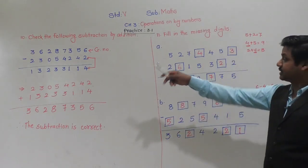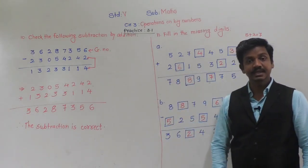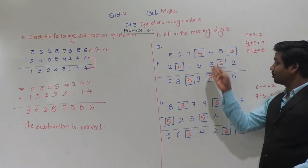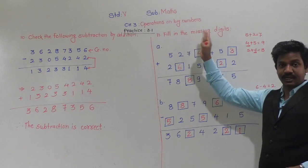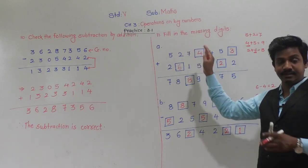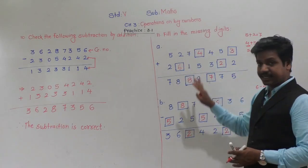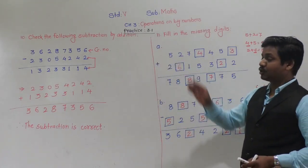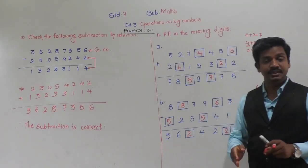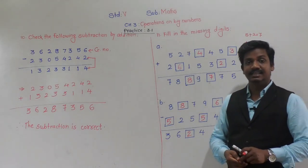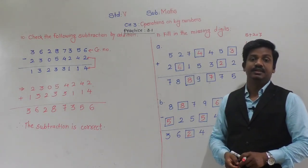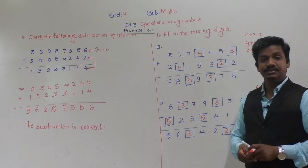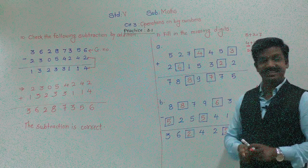Understood? This way these types of examples can be solved. Sometimes there will be borrowing or carrying also — we have to take care of that. These were very basic examples which we solved easily. Pause this video and write this in your notebook. We have completed Practice 3.1. If you have any doubt regarding Practice 3.1, please forward it to me. Thank you and have a nice day.